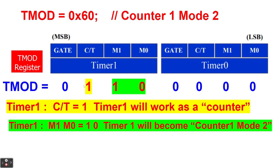But in this situation, we made it 0, 1, 1, 0, 0, 0, 0, 0. This means that timer 1 will become a counter, so we will just call it counter 1. As we have discussed before, M1 M0, we have 1, 0. This means that this is mode number 2.